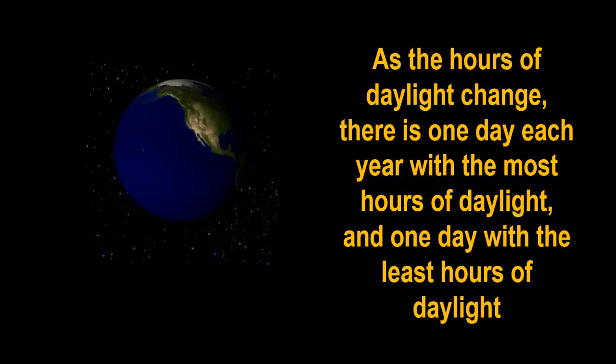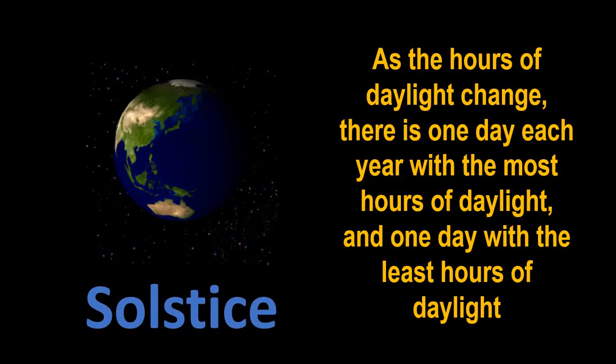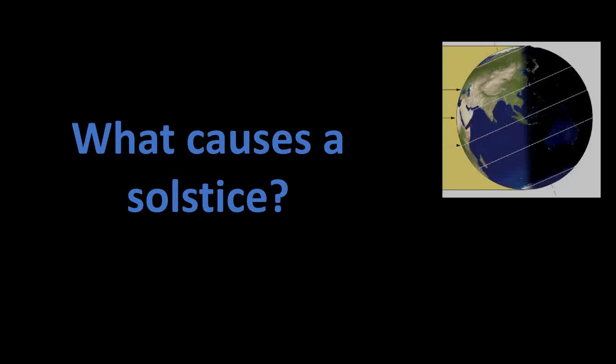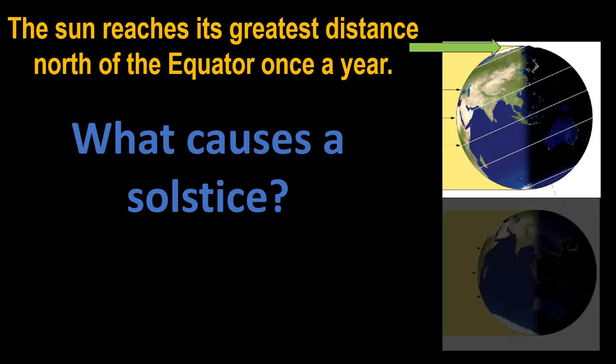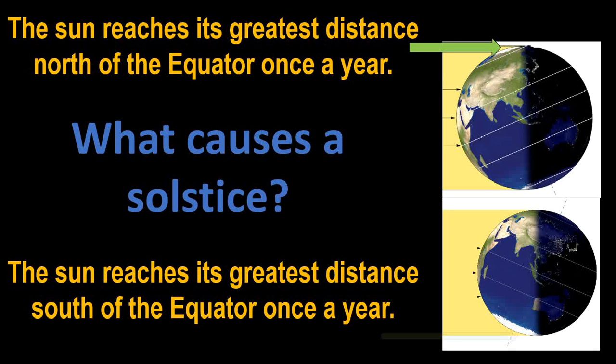Those days are solstice days. A solstice day is caused when the sun reaches its greatest distance north of the equator or when the sun reaches its farthest distance south of the equator.